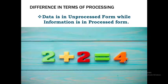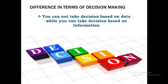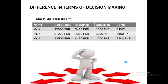Now, explaining the difference between data and information in terms of decision making. Always remember that you cannot take a decision based upon data, while you can take a decision based upon information. Let me demonstrate with a simple example. This is the salary detail of Mr. X, Mr. Y, and Mr. Z. I have to decide how much money should be deposited in the account of each as their monthly salary. Their basic salary, monthly allowance, deductions, and bonus are all mentioned here. But the question is — is this data or information? This is definitely data, because I cannot make a decision on how much money should be deposited in the account of Mr. X, since the processing — which may be addition, subtraction, or a combination — has not been performed yet.